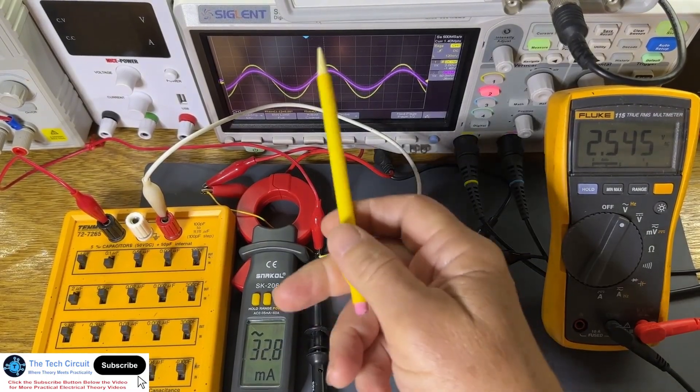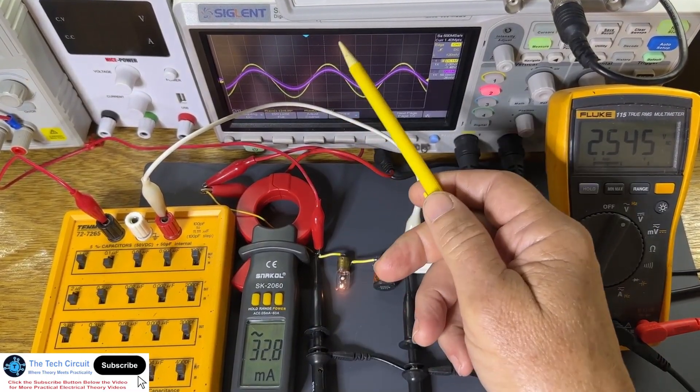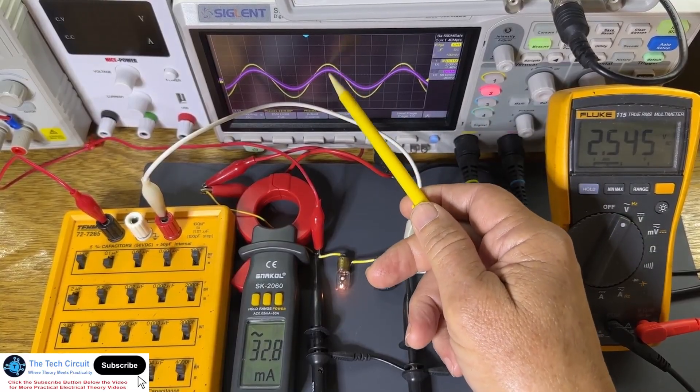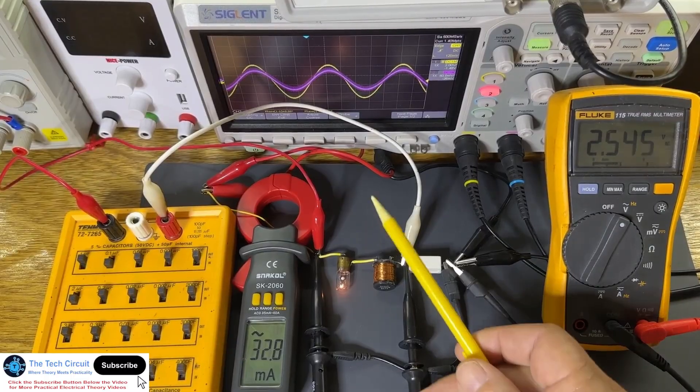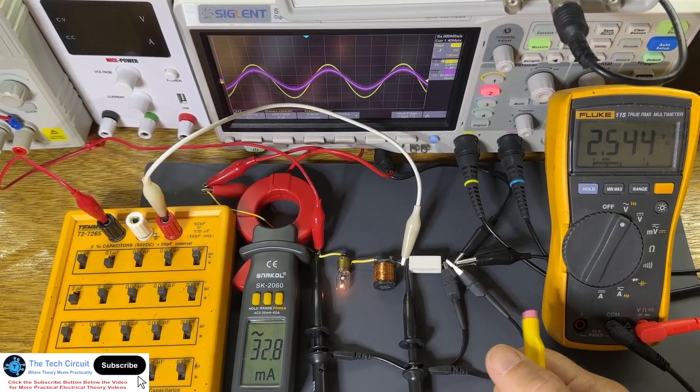With just one capacitor, we eliminated wasteful reactive power and lined up voltage and current perfectly. This demonstration was obviously small scale compared to what one may consider to be a practical case for power factor correction.